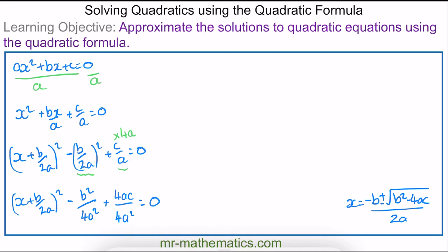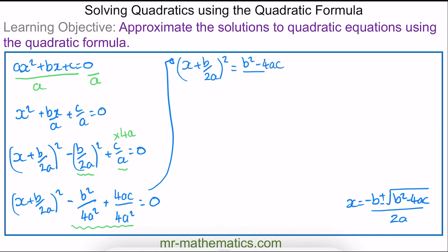Now I'm going to move these two fractions to the other side of the equal sign and write them over a single denominator. This becomes equal to (b² − 4ac) / 4a².